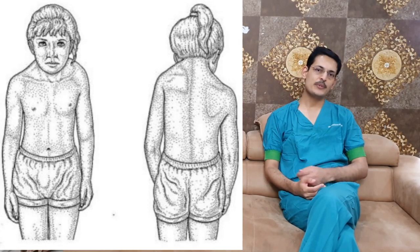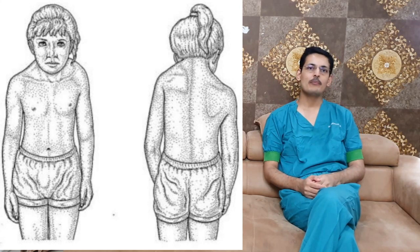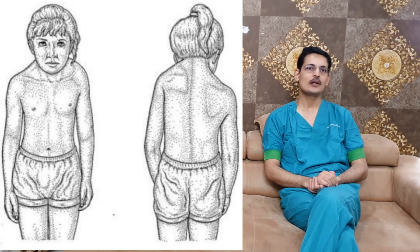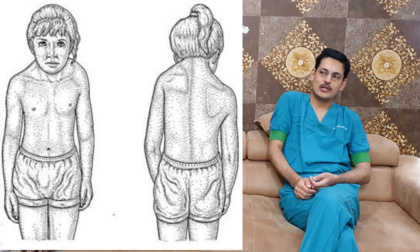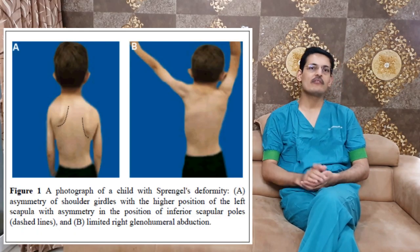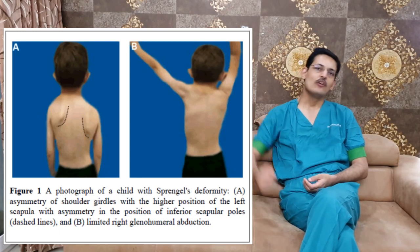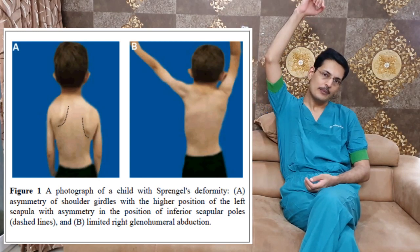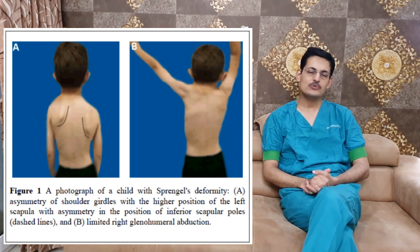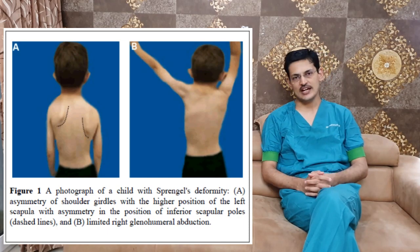Sprengel's shoulder is essentially an elevation of the scapula, and there are two basic problems associated with it. The first problem is a cosmetic problem, because the shoulder will appear raised with the scapula up. The second problem is an abduction problem — the child will not be able to raise the hand fully up. These are the two main difficulties a child faces.